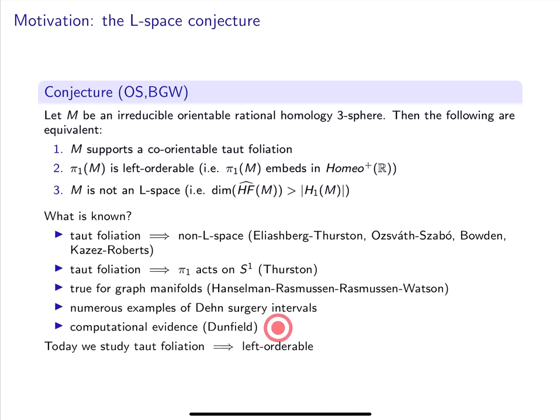At last, Dunfield has been searching for a counterexample among small hyperbolic manifolds and has now built up a rather impressive corpus of computational evidence for the conjecture. So, what I'm going to talk to you about today is the implication taut foliation implies left orderable.